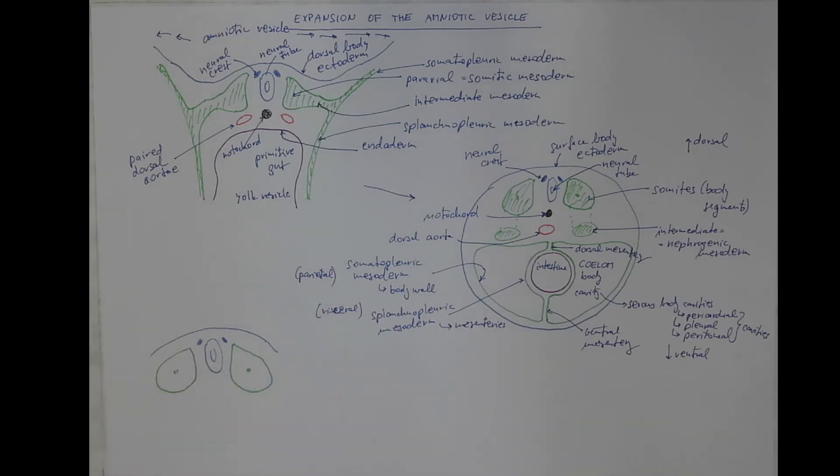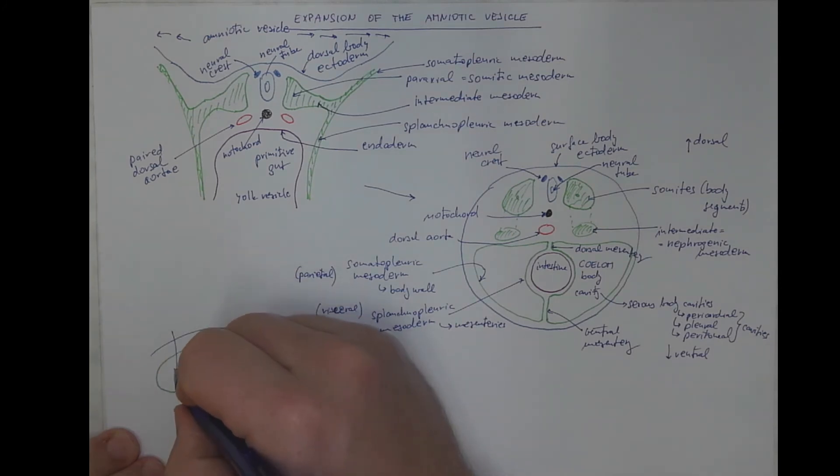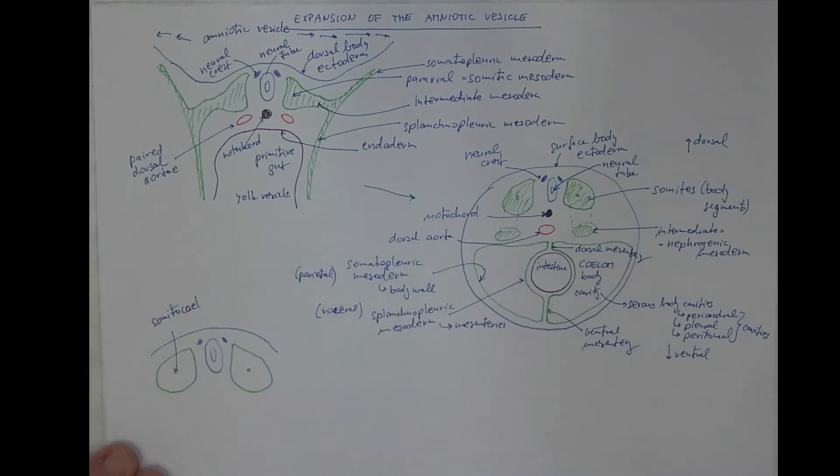This part of mesoderm contains a small microscopic cavity called somatocoel, and it will split into several cell populations. The ventral medial population will become independent. They will migrate.